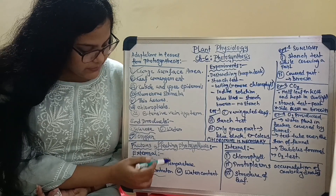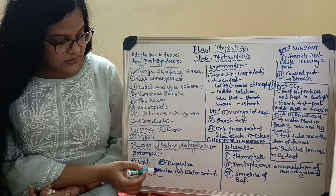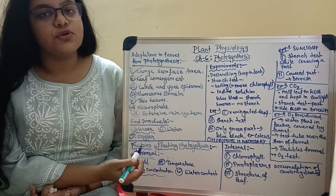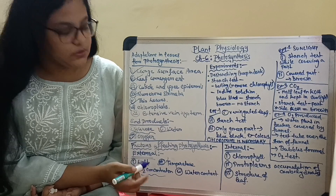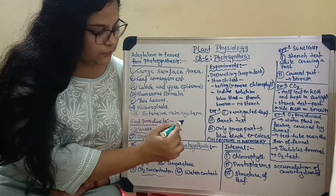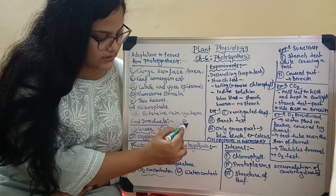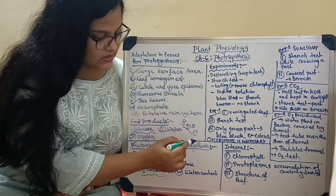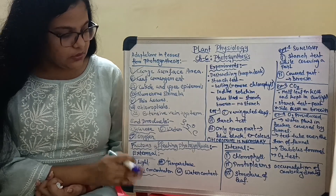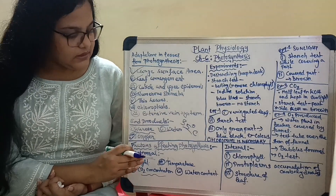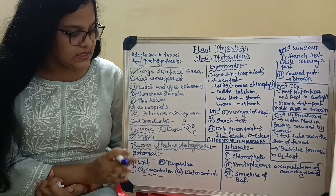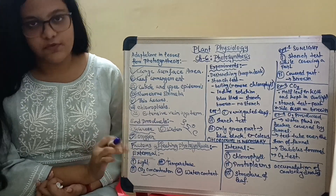Next comes temperature. With an increase in temperature the photosynthesis rate will increase, but only up to a certain level. The optimum temperature for photosynthesis is 35 degrees Celsius. If the temperature rises more than that, it will destroy cell organelles and cause the closure of the guard cells, hence stopping photosynthesis.